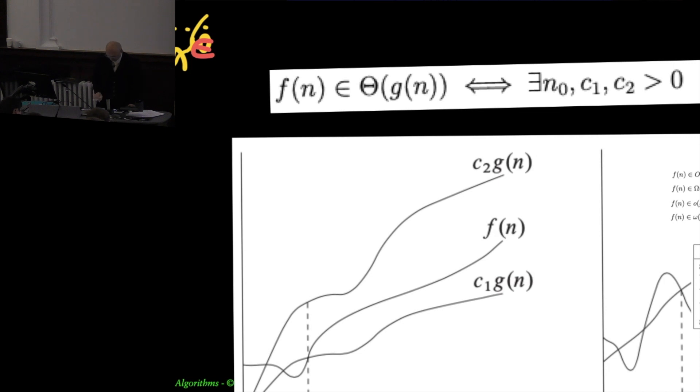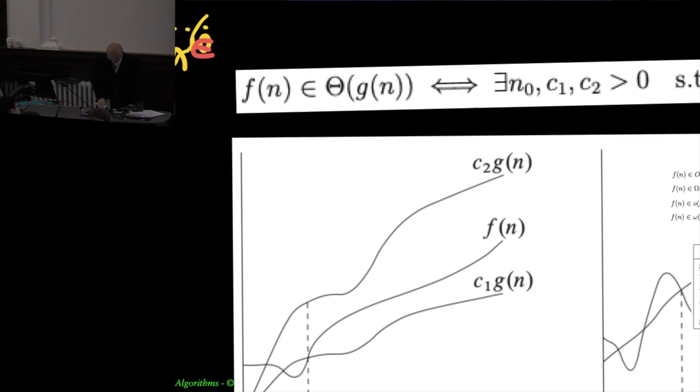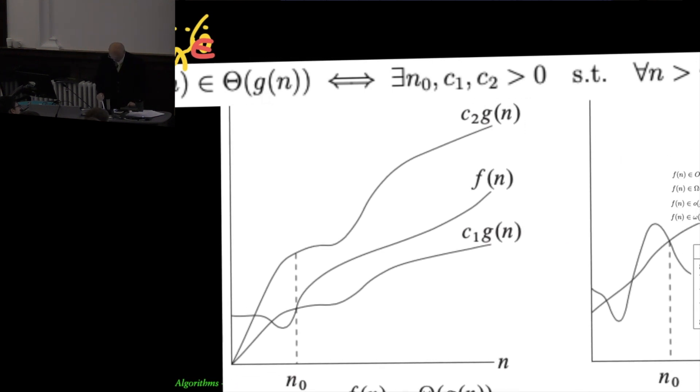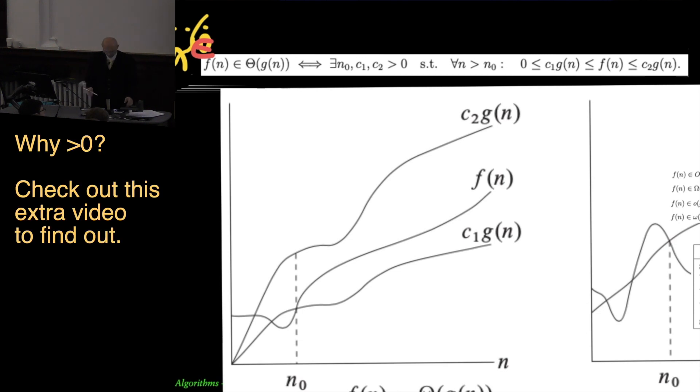f of n belongs to the set of theta of g of n if and only if there exist these constants, and n zero is a number from which onwards the property holds. So from n zero onwards, and c1 and c2 are the coefficients of g of n, for all n that are greater than n zero then f of n is contained between c1 g of n and c2 g of n.